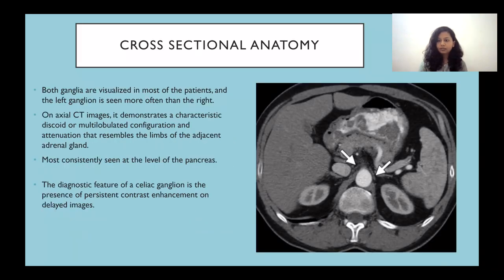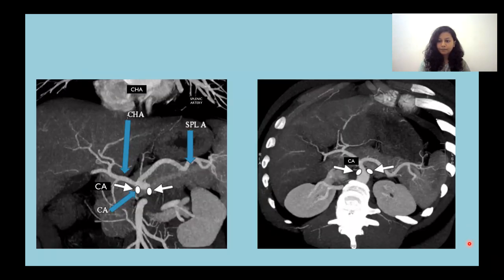Cross-sectional anatomy: both ganglia are visualized in most patients and the left ganglion is seen more often than the right. On axial CT images, it demonstrates a characteristic discoid or multilobulated configuration and attenuation resembling the limbs of the adjacent adrenal gland. It is most consistently seen at the level of the pancreas, and the diagnostic feature on contrast-enhanced imaging is persistent contrast enhancement on delayed images. This coronal MIP image shows the position of the common hepatic artery, the splenic artery, and the celiac axis with the position of the celiac ganglion.